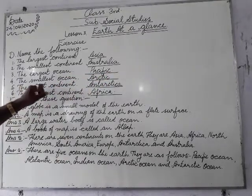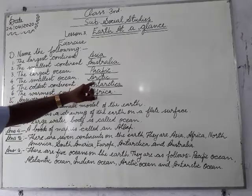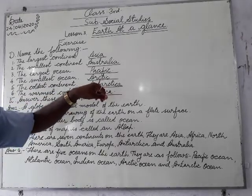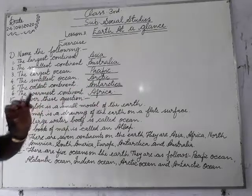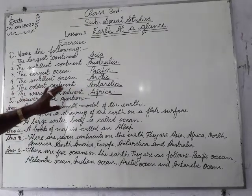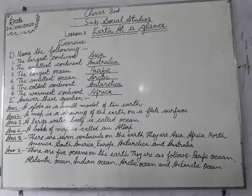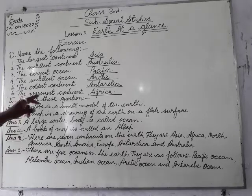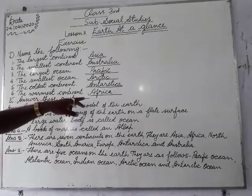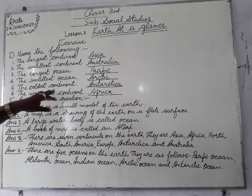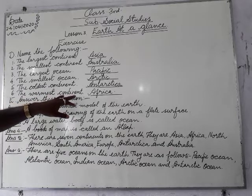The smallest ocean is Arctic. The coldest continent is Antarctica. The warmest continent is Africa.